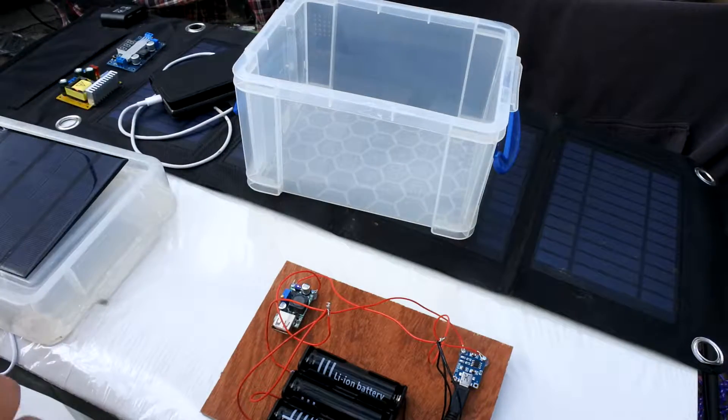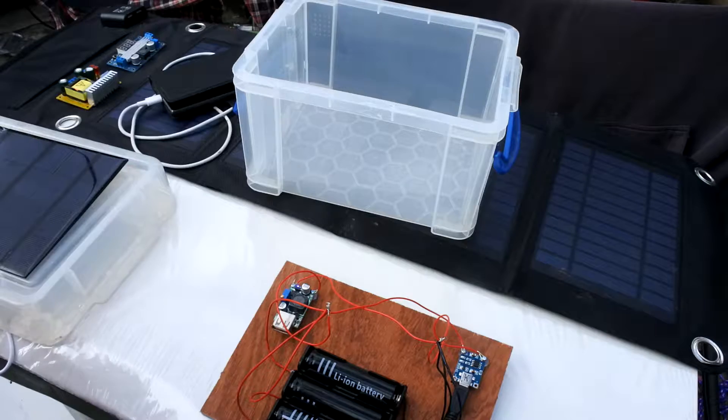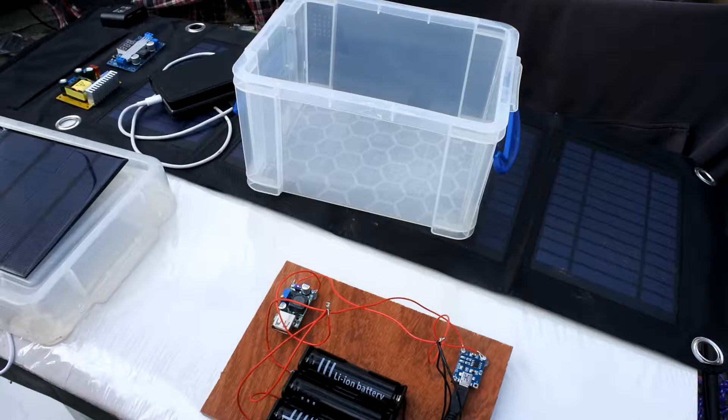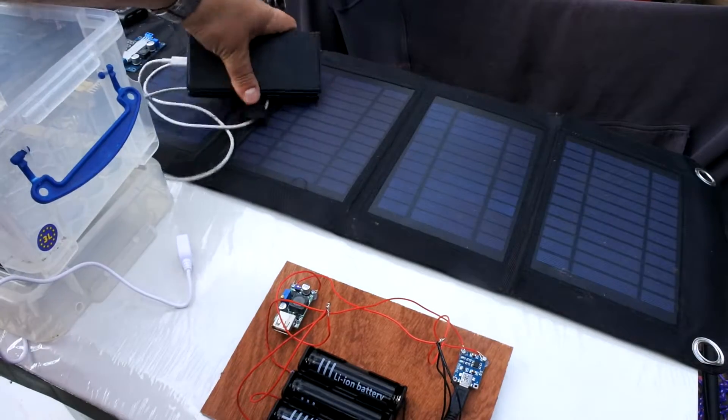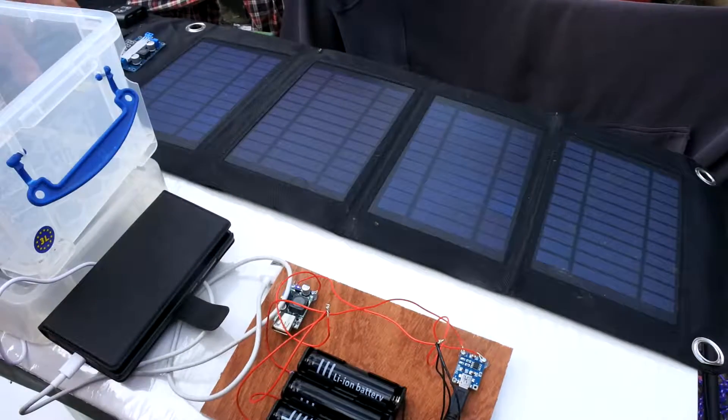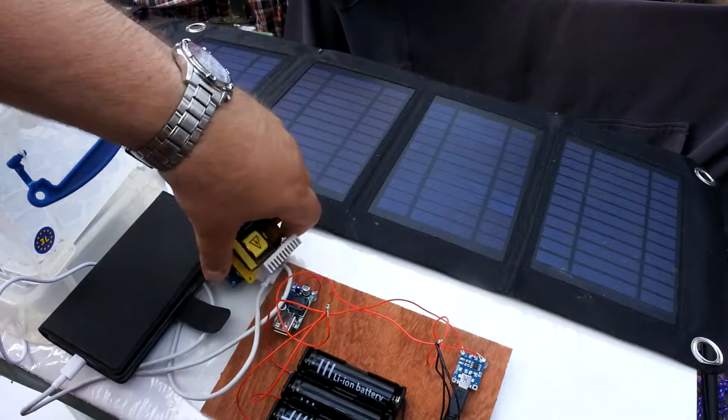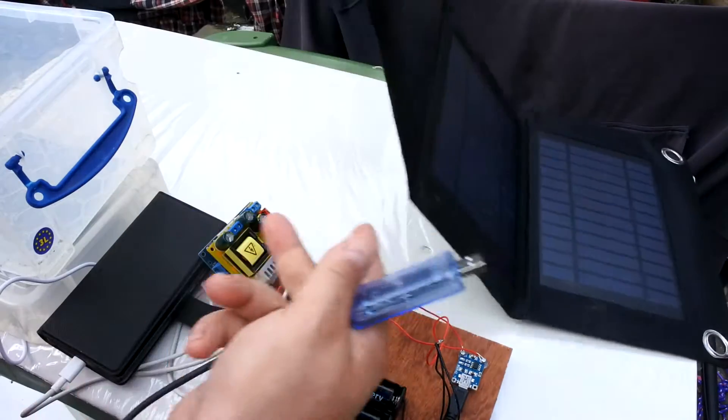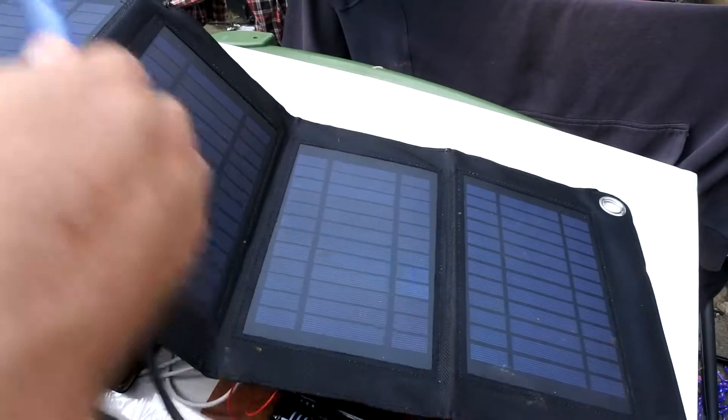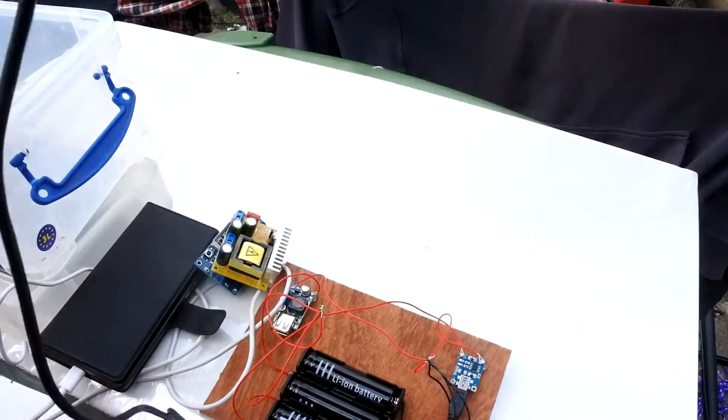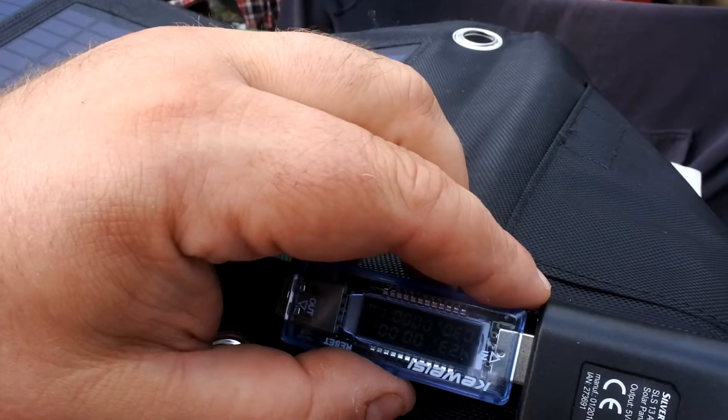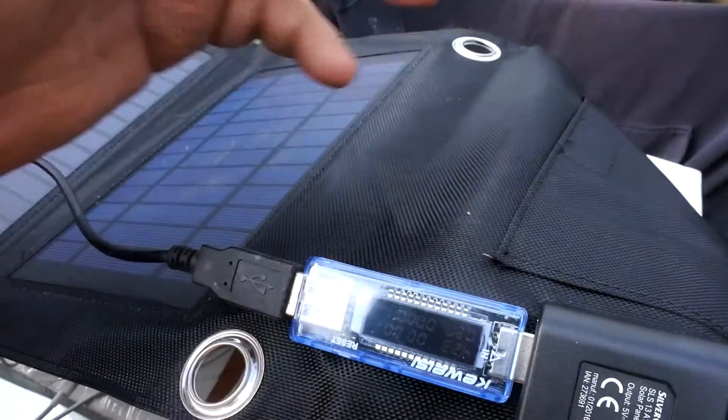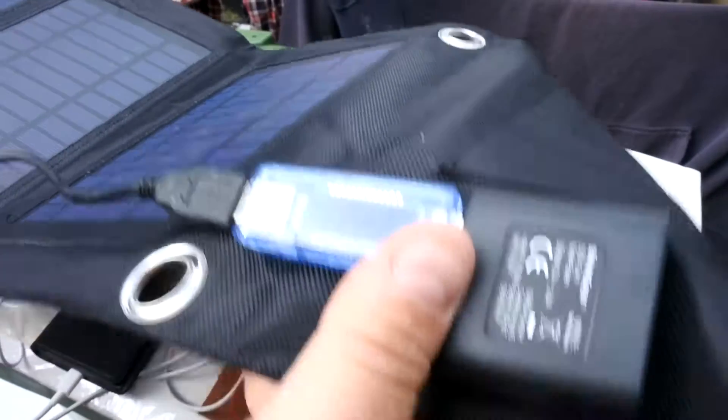What I will do instead is actually test it with the big Silvercrest solar panel. Got this in Lidl, it's huge, it's good quality. Let's see what sort of power output we're getting on this. It'll be upside down, but 29, 30 milliamps, so that's better. And that's with the sun behind the clouds.